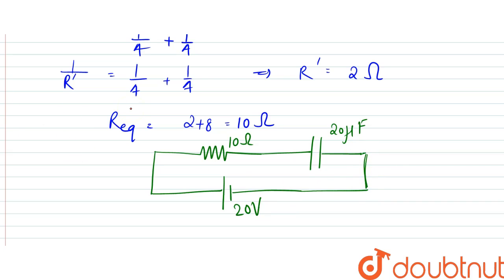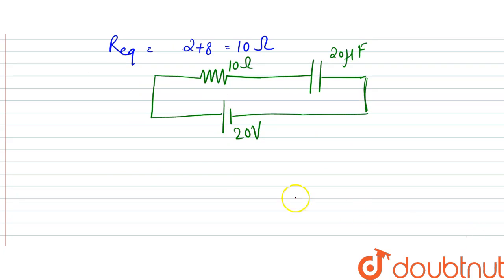So this is the simplest circuit. So from here, we can compare it with the ideal circuit. That is R would be equal to 10 ohm. C is 20 into 10 to the power minus 6 farad. And V is 20 volt.